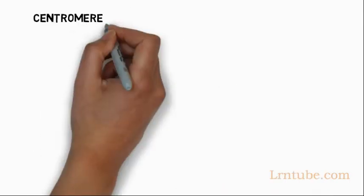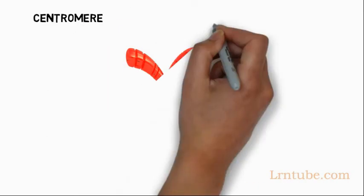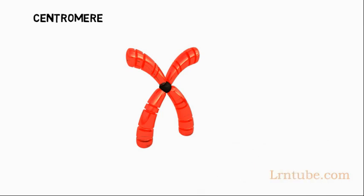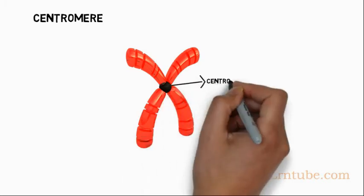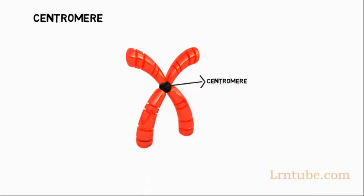The centromere is a very specific part of the chromosome. It is found not always right in the middle, but somewhere between one third and two thirds of the way down the chromosome. It is the part where the cell's chromosomes are constricted, often referred to as the site of constriction because they form noticeable indentations.